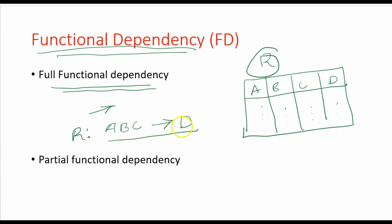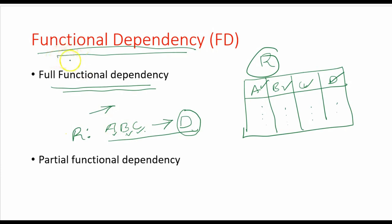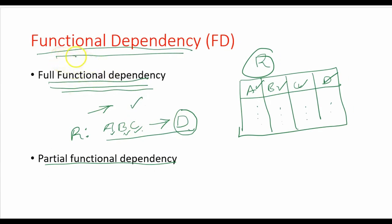Functional dependency is of two types: one is full functional dependency, and another one is partial functional dependency. In this case, attribute D is functionally dependent on A, B, C — this is functional dependency. The classification into full and partial helps us understand the nature of that dependency.